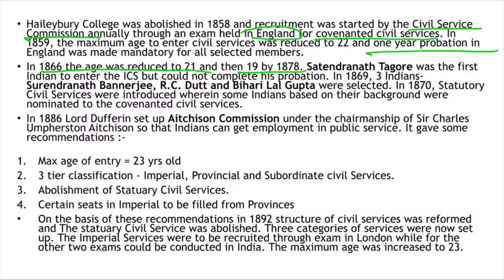In 1869, three Indians — Surindranath Banerjee, R.C. Dutt, and Biharilal Gupta — were finally selected as part of the Indian Civil Services. In 1870, a statutory civil services scheme was introduced where Indians of good background, such as from certain princely households or rich landlord families who were well acquainted with British officers, could be nominated to the covenanted civil services.